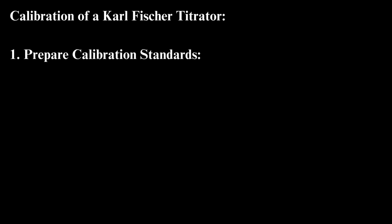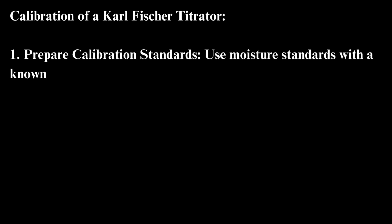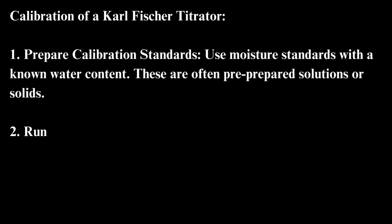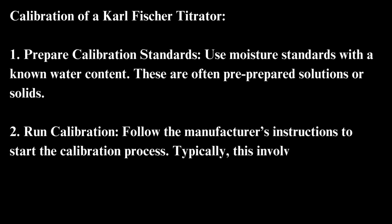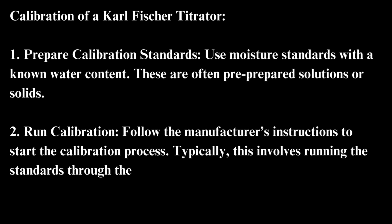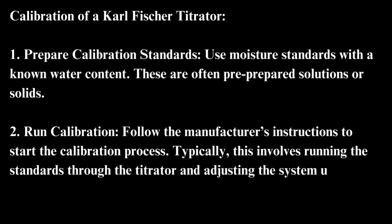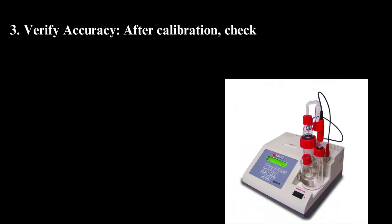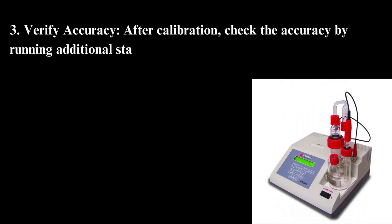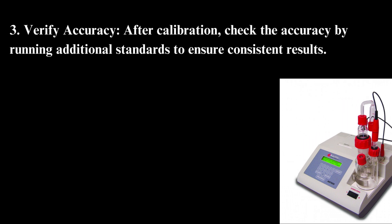Calibration of a Karl Fischer titrator: first, prepare calibration standards — use moisture standards with a known water content, often pre-prepared solutions or solids. Then run calibration by following the manufacturer's instructions. Typically this involves running the standards through the titrator and adjusting the system until the readings match the known values. Finally, verify accuracy by running additional standards to ensure consistent results.